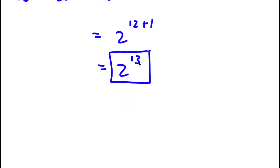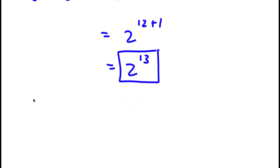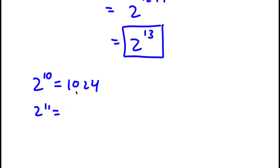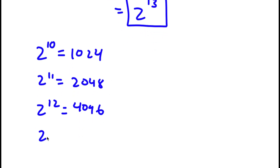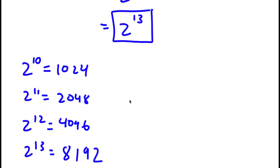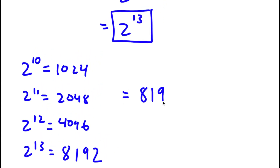So 2 to the power of 13 is my answer. I'm going to simplify to get the exact value. We know 2 to the power of 10 is 1,024. So 2 to the power of 11 is 2,048, 2 to the power of 12 is 4,096, and 2 to the power of 13 is double of 4,096, which is 8,192. So 8,192 is my answer.